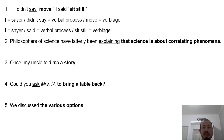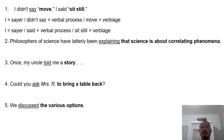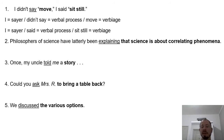'Philosophers of science have literally been explaining that science is about correlating phenomena.' So what is the sayer? Philosophers of science. 'Have been explaining' is the verbal process. 'Literally' is a circumstance in between. And 'that science is about correlating phenomena' is what is explained — so it's the verbiage.